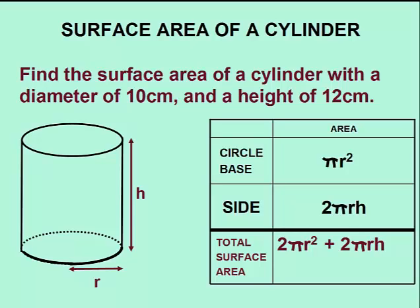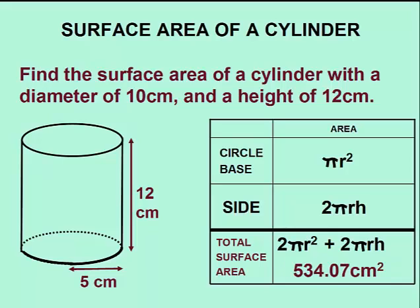We can now use this formula to calculate the surface area of our cylinder. We'll substitute in 5 for the radius and 12 for the height, giving us a final answer of 534.07 centimeters squared, accurate to two decimal places.